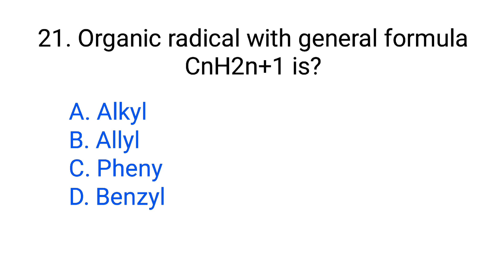Question number 21. Organic radical with general formula CnH2n+1 is. Option A: Alkyl. B: Allyl. C: Phenyl. D: Benzyl. The correct answer is option A, Alkyl.